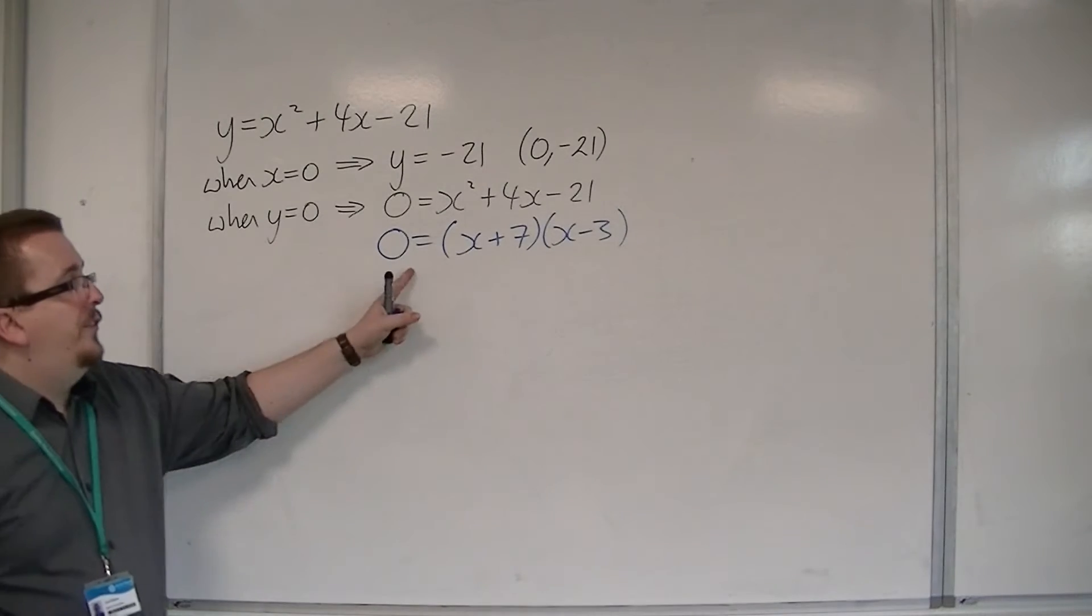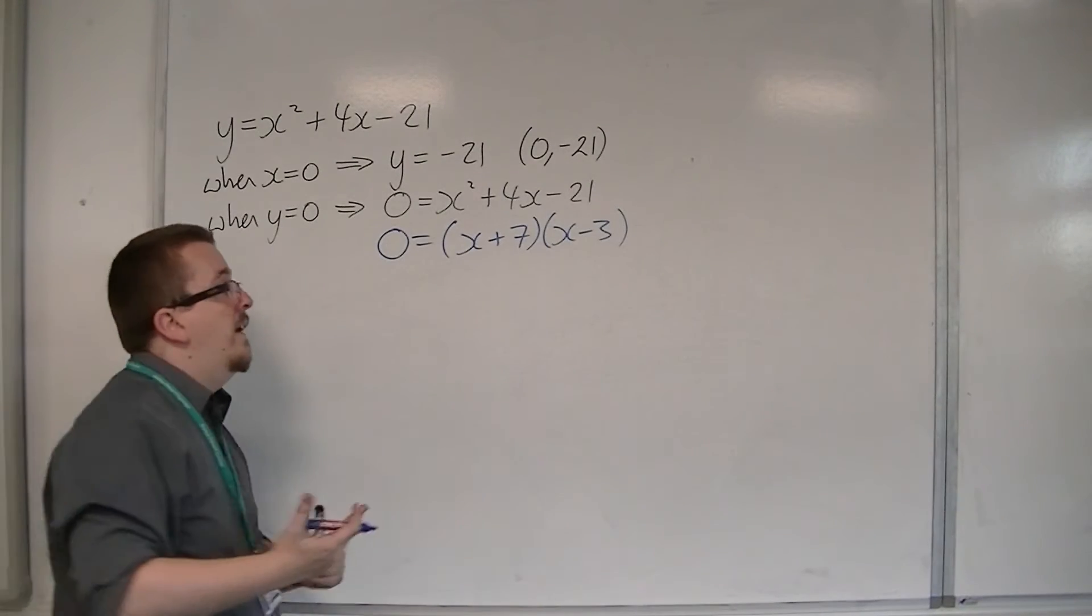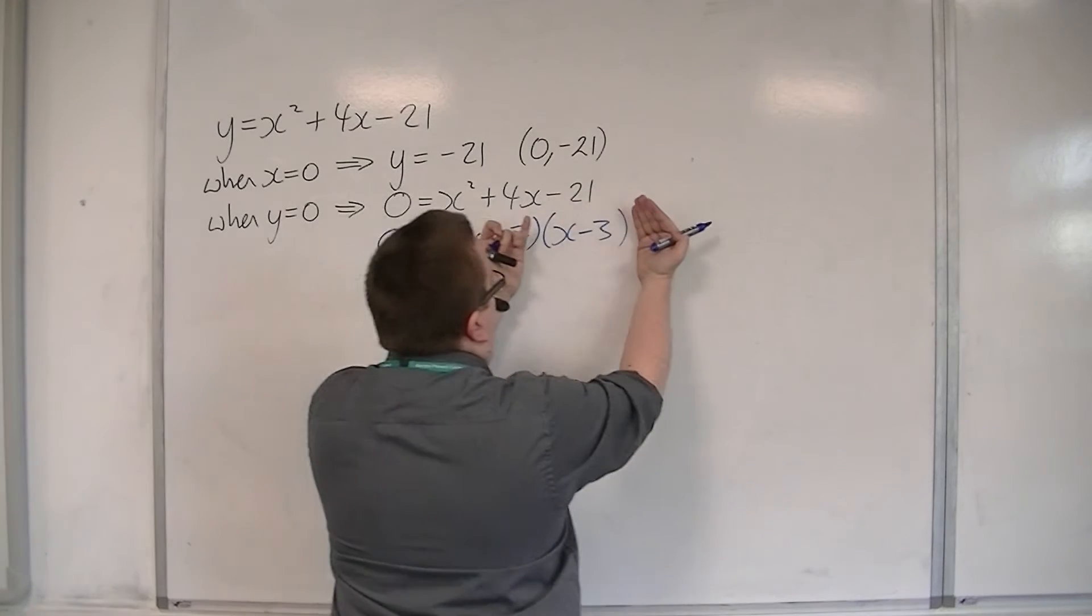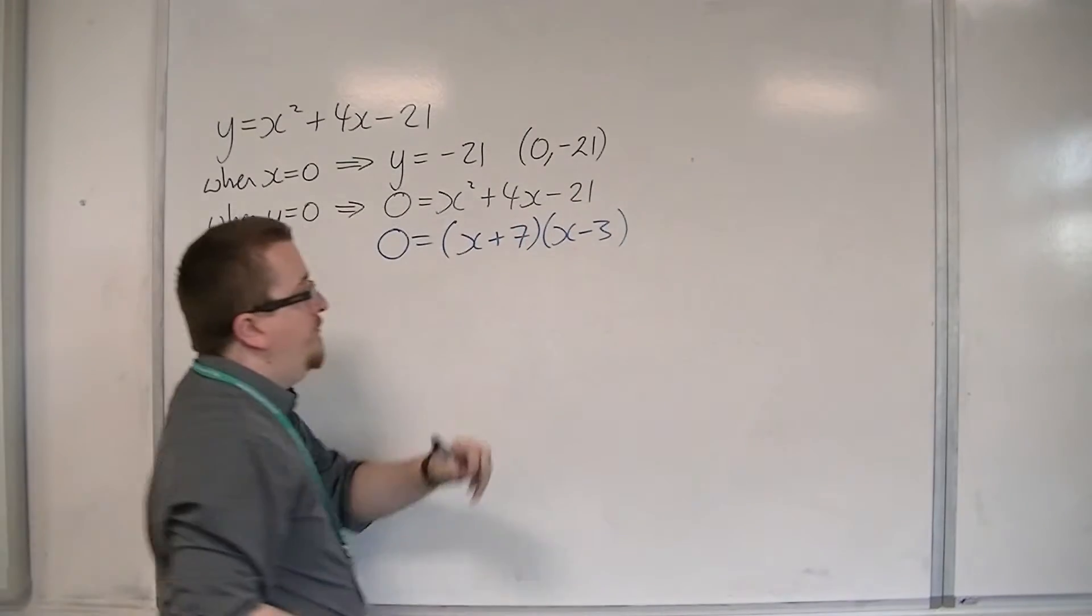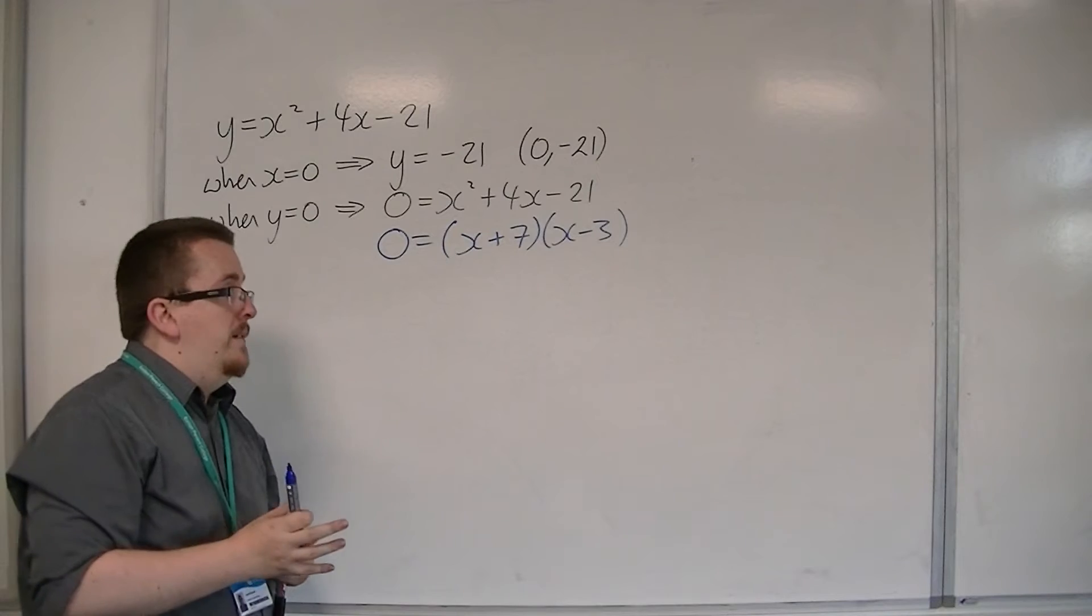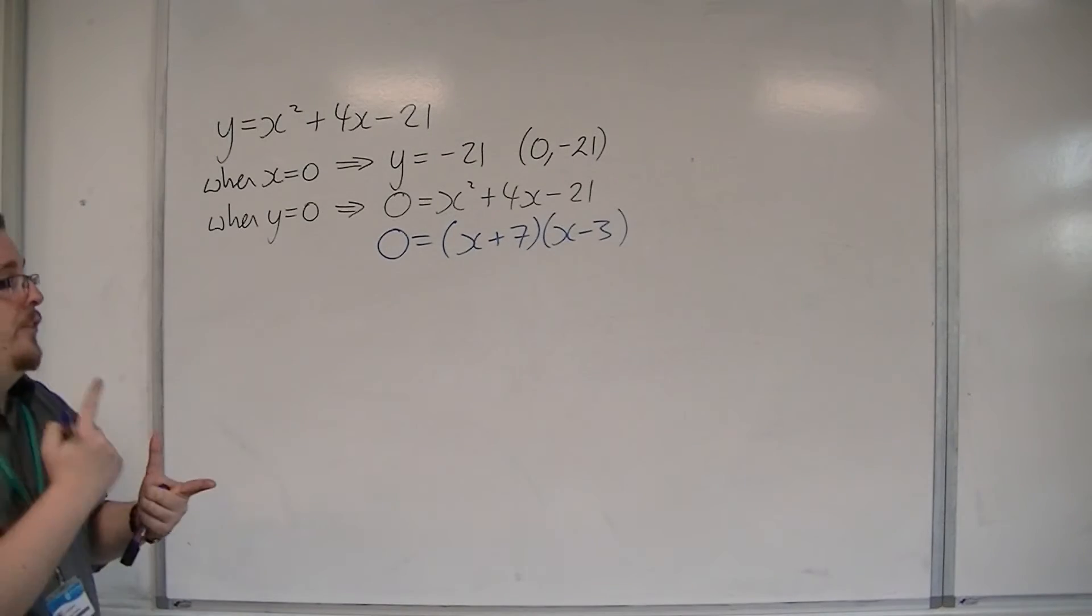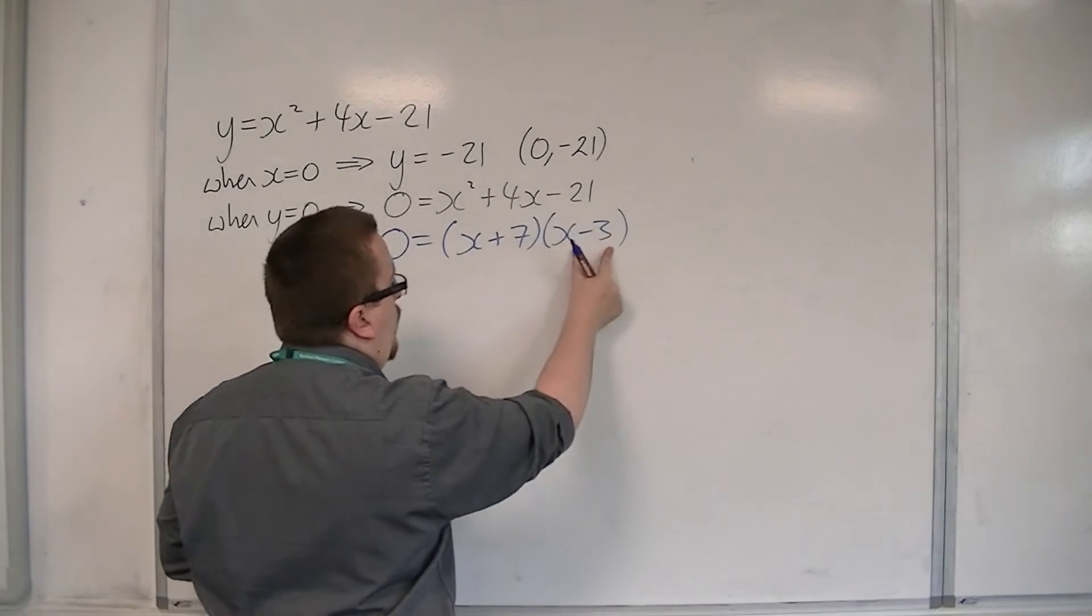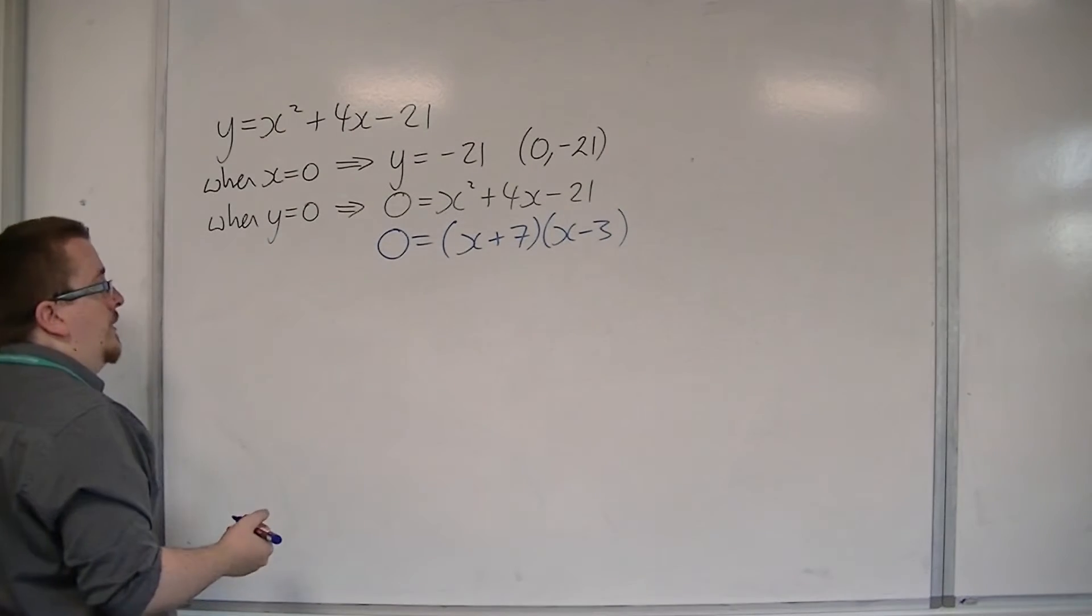Now, if this is equal to 0, that would mean that either this bracket is 0, or that bracket is 0. Okay? They can't both be 0 at the same time. So there will be values of x that I substitute in that will give me that 0, or that 0.